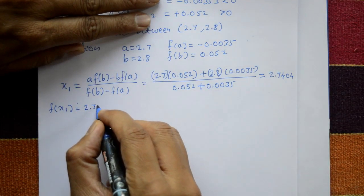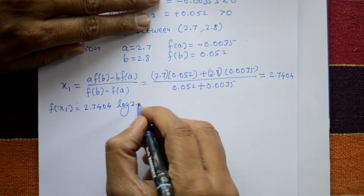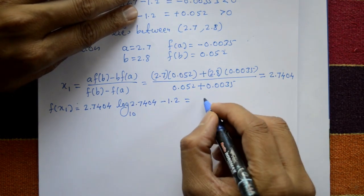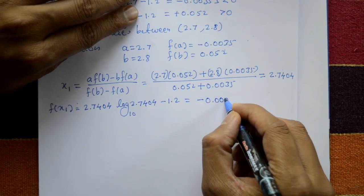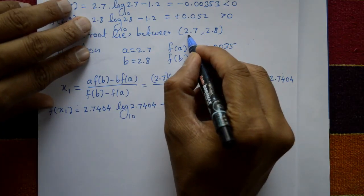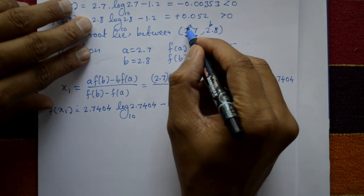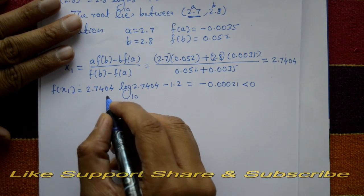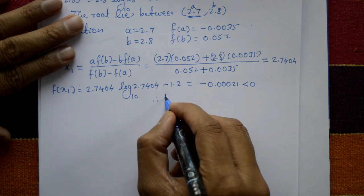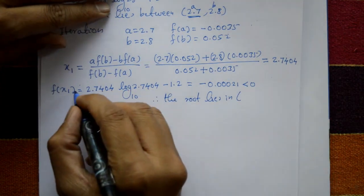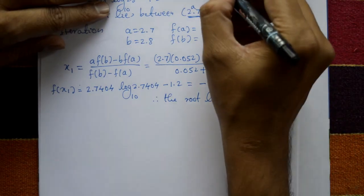Now substitute x1 = 2.7404 into the main equation: f(x1) = 2.7404·log₁₀(2.7404) - 1.2 = -0.00021. This is less than 0, so we update a = 2.7404, keeping b = 2.8 unchanged.